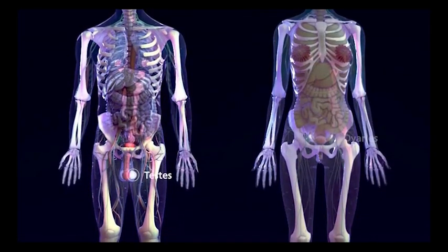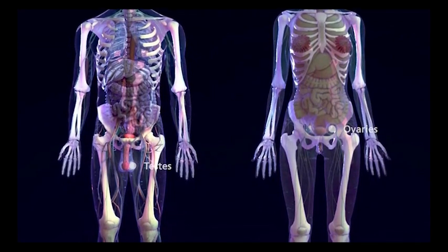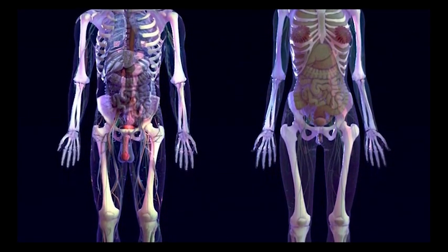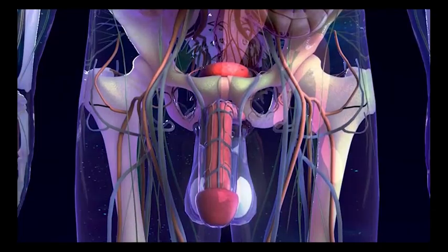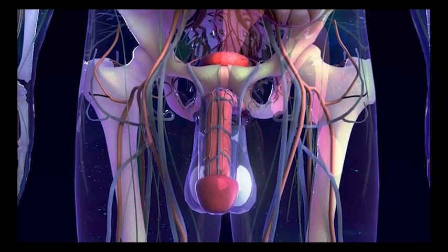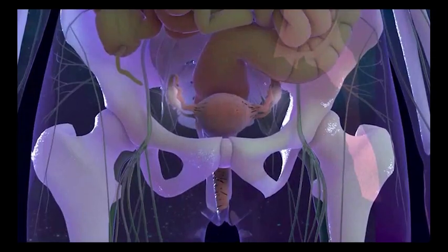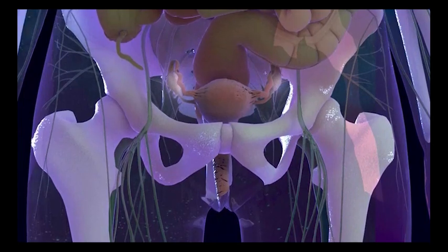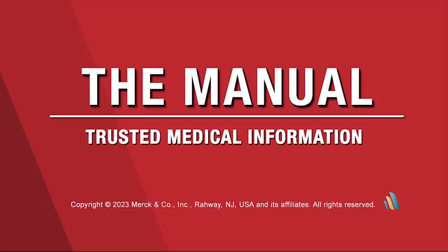The testes and ovaries produce sex hormones and reproductive cells under the control of the pituitary. The testes produce testosterone and sperm. The ovaries produce estrogen and eggs.